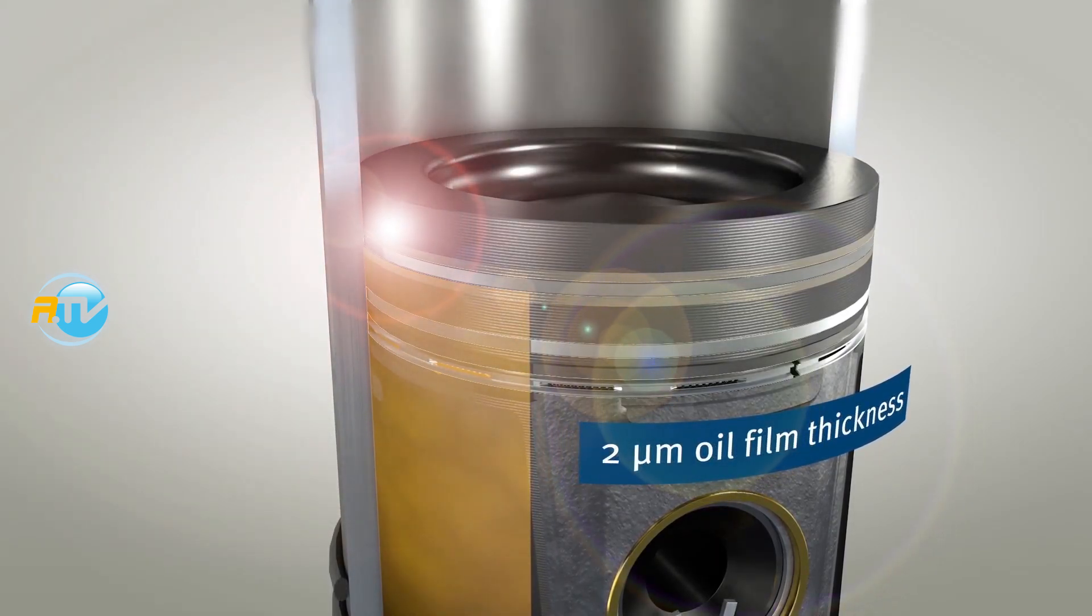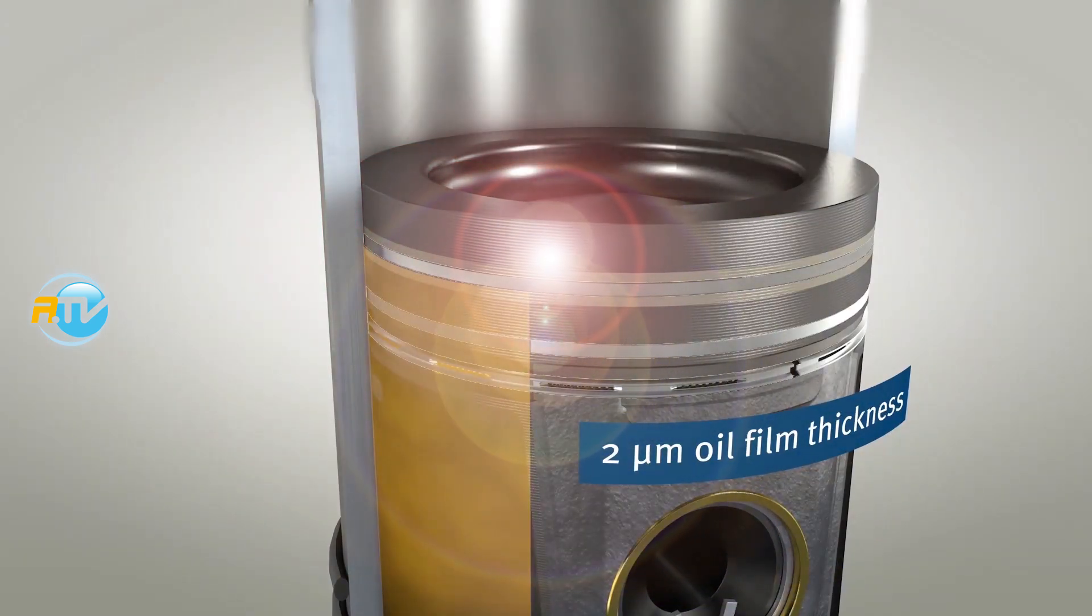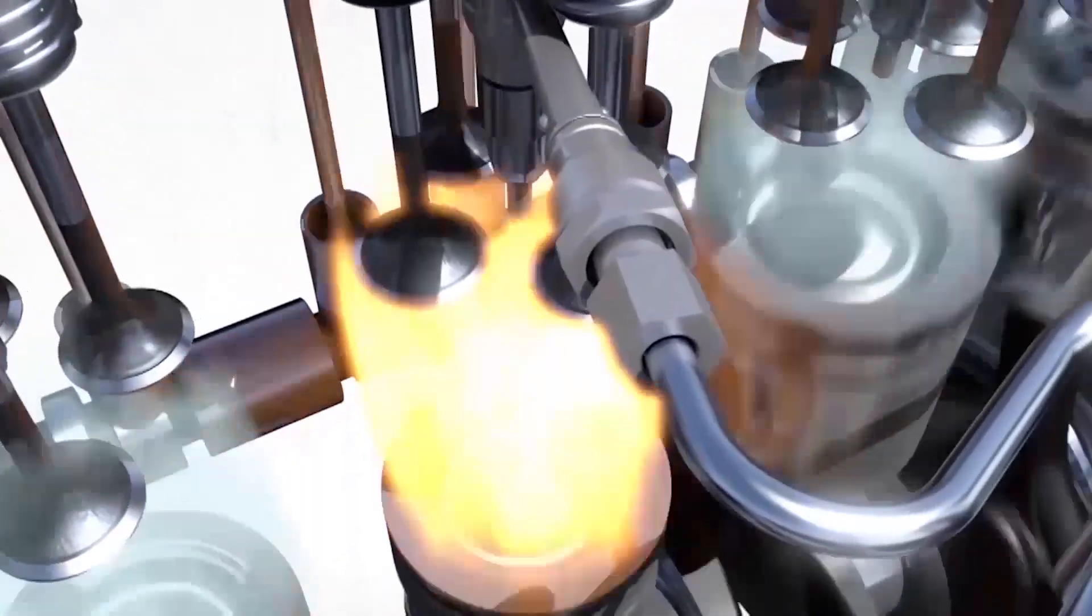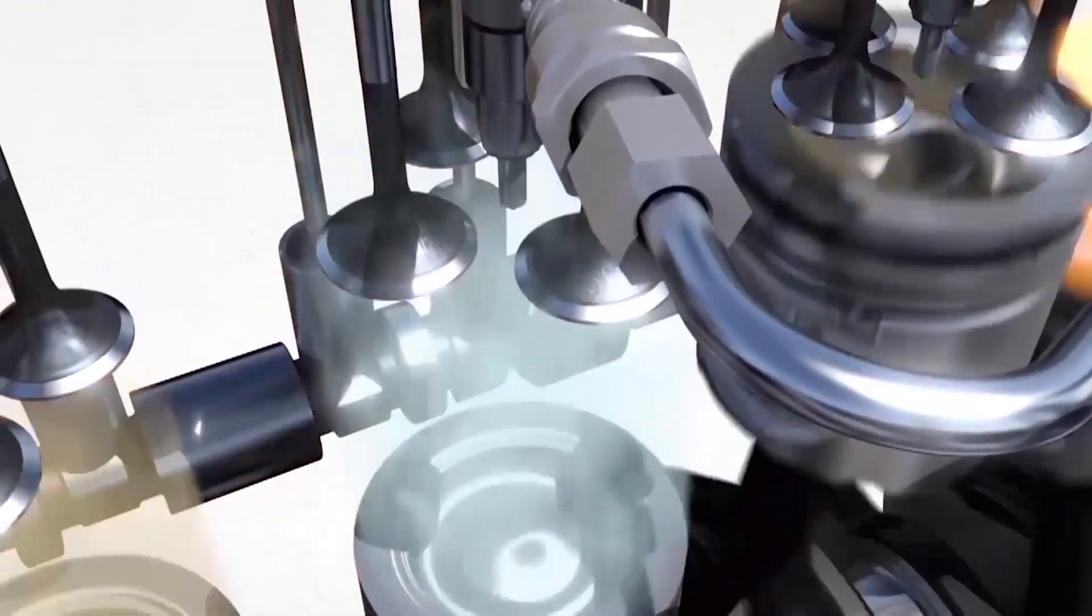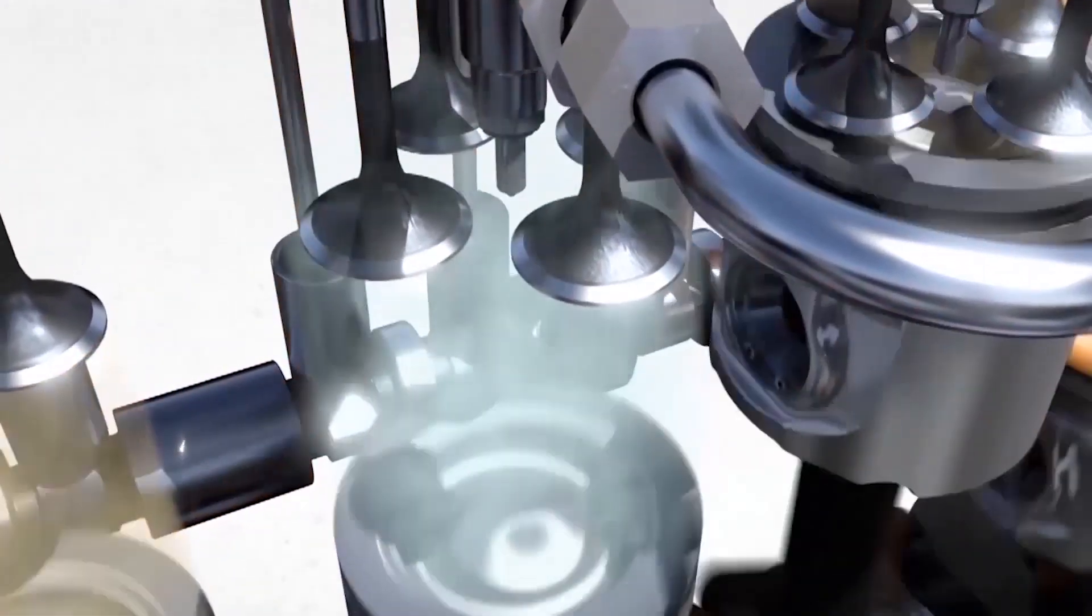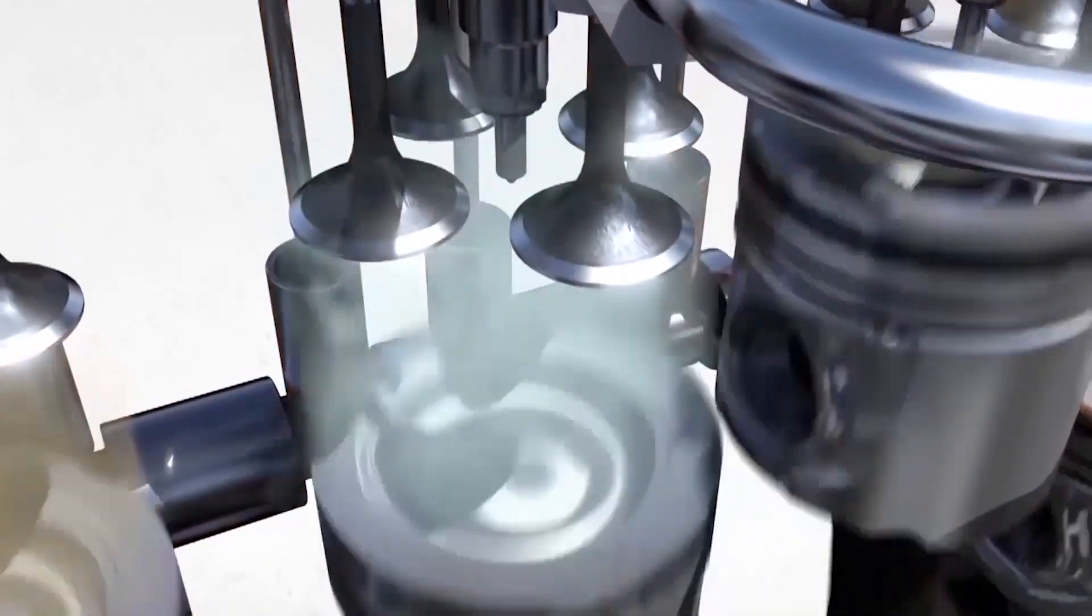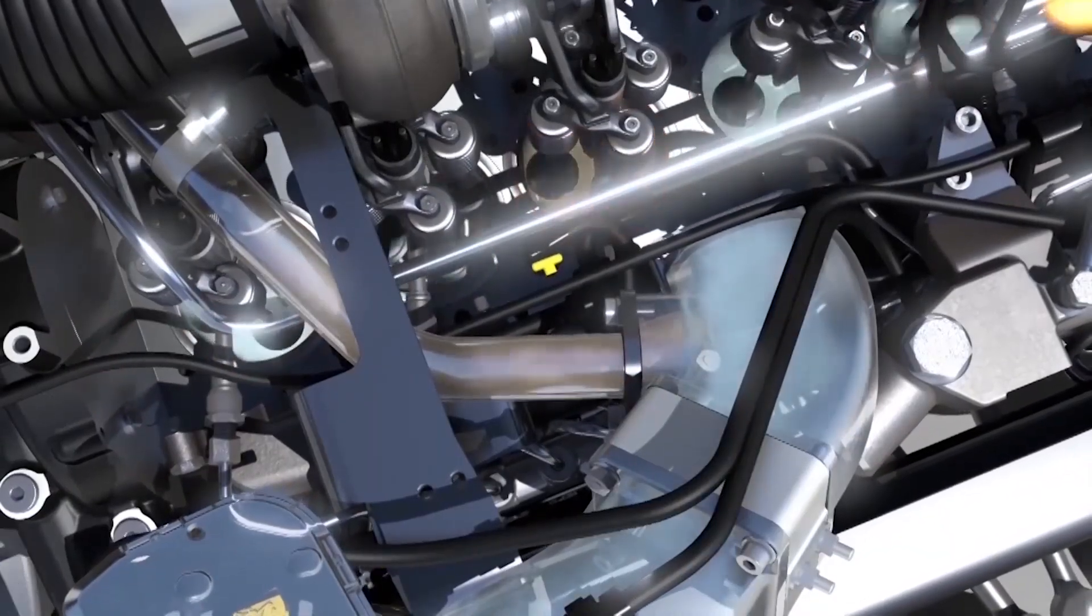The sheer velocity that the piston is moving at is highly variable. We can go from about 15 feet per second up to about 80 feet per second. Here in this example at 2,000 revolutions per minute.